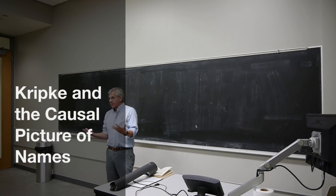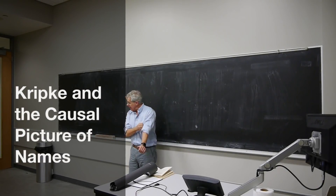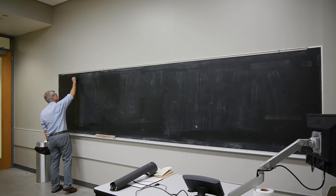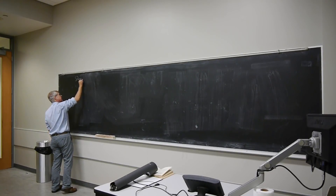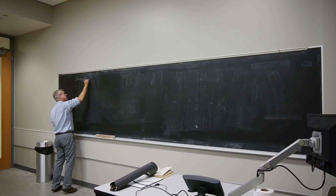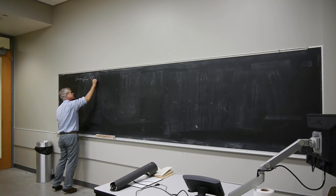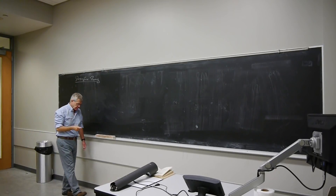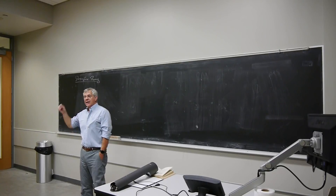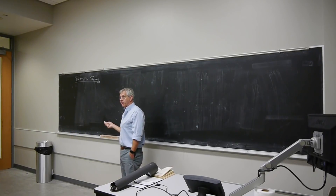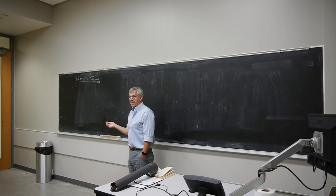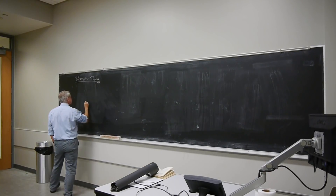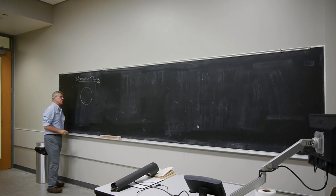We're going to return to our discussion of Kripke's theory of naming. Last time we were looking at his main target, the descriptive theory — the theory that he finds in figures like Frege and Russell, as well as other theorists like John Searle. And the idea behind the descriptive theory: last time we listed it in terms of a number of theses, today instead I'm going to draw a picture. We'll think about what it is for someone to actually use a name.